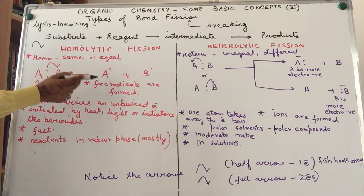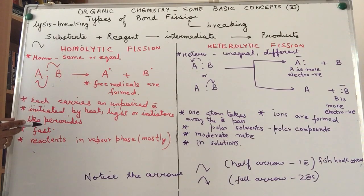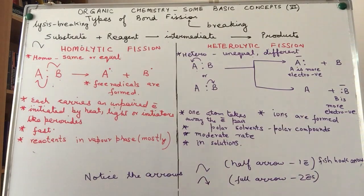Such type of intermediates are free radicals. The free radicals have unpaired electrons but they are neutral. This type of bond breaking usually happens when substances are exposed to heat, light, or there are specific reagents we call initiators like peroxides.